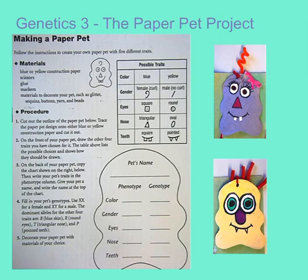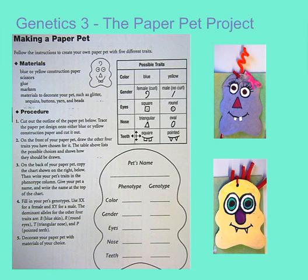The first step is to use the making a paper pet worksheet and choose the traits that you want your paper pet to have. Looking at this chart, you can choose blue or yellow for the color of your paper pet. Gender, obviously male or female. Eyes can be square or round. Nose, triangular or oval. And teeth can be square or pointed. You can get as creative as you want and add any other characteristics to your paper pet — crazy hair, crazy ears, freckles, anything like that — but for these five traits, you have to choose from this chart.